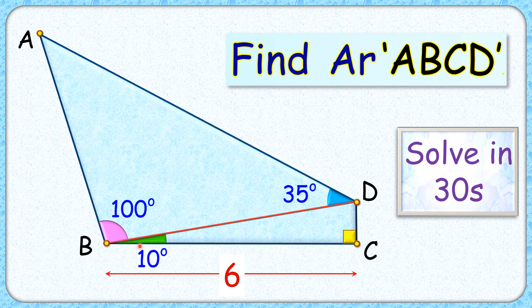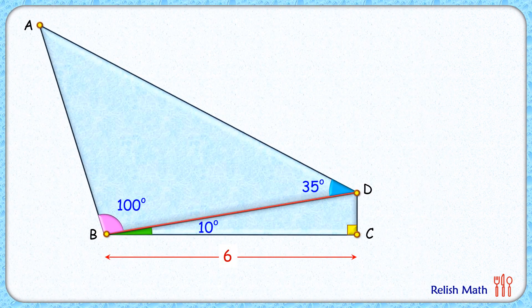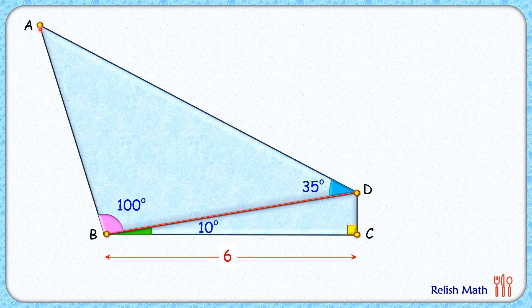The exciting part is, with this limited data, we have to find the area of quadrilateral ABCD and that too in 30 seconds. Let's check this simple and elegant solution. Here we'll divide this quadrilateral into two triangles by cutting it across the diagonal BD and rotate this bottom triangle by 180 degrees.